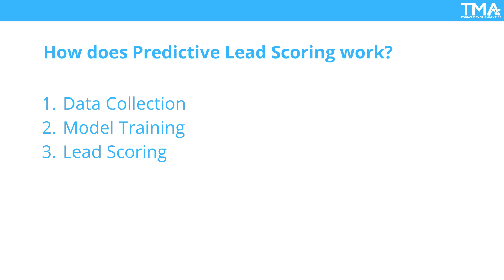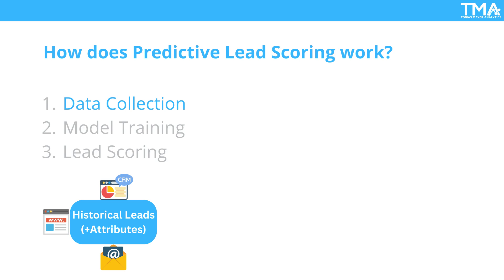First up is data collection. To build an effective predictive model, you need a wealth of data. This includes historical sales data, customer demographics, website interactions, email engagement, social media activity, and more. For example, your CRM might contain information about past leads who converted. You can pull in data like how many times they visited your site, which products they looked at, their job title, and their company size. All of this data will help you build a profile of what a high potential lead looks like.